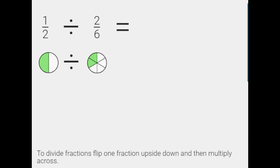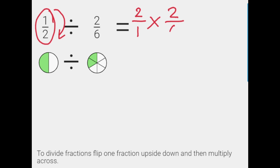Let's work through another problem together. We've got one half divided by two sixths. First we're going to flip our one half upside down and we're actually going to rewrite our problem into a new equation. So one half flipped upside down becomes two over one. We're going to change our division sign to multiply and we're going to rewrite our other fraction just as it is. Now we have a multiply fraction problem.